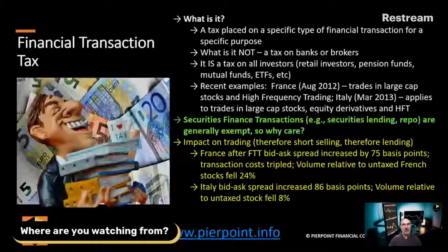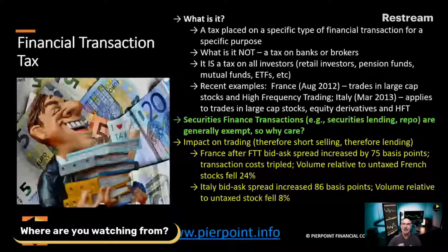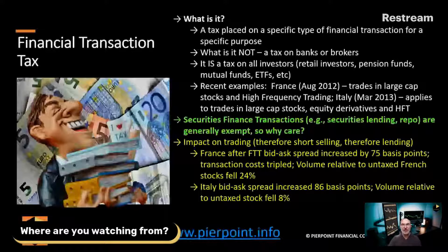Now we're going to talk about Basel III and Dodd-Frank. These are two different regulations: Basel III is a global one, and the Dodd-Frank Act is a US one. But there are many areas of overlap, and both cover a really broad spectrum of activities — balance sheets and capital allocations. I'm just focusing on the couple of areas where there's an overlap for securities finance transactions. Basel III is a global regulation but needs to be implemented country by country, so individual countries work on their own schedules, whereas Dodd-Frank was installed in the US in 2010.